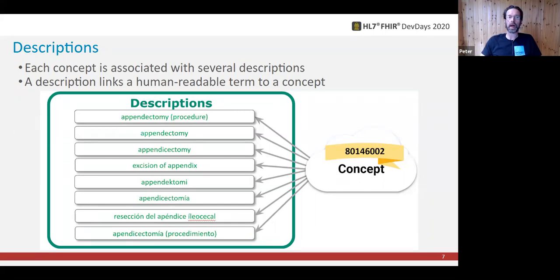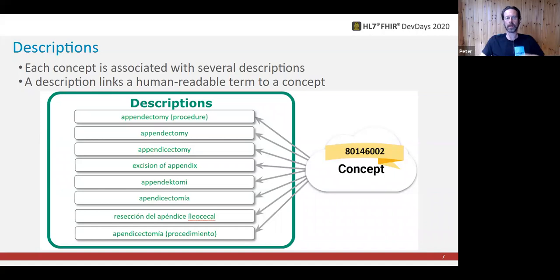FSNs must be unique in a given language across all active SNOMED concepts. The FSN includes a semantic tag — the thing in brackets — which is used to disambiguate and tells you what major hierarchy a concept is in. The one exception is drug-eluting stents, which belong in two different major hierarchies at the same time: they're both medicinal products and physical objects. So when you add up the number of concepts in each major hierarchy you come up with six more concepts than exist in all of SNOMED CT — and that situation has tripped me up more times than I'd care to admit. Synonyms, by contrast, do not need to be unique. For example, fundus — the part of an anatomical structure opposite an opening — exists in the stomach, the eye, uterus, and gallbladder, and physicians in each specialty all call that part a fundus.